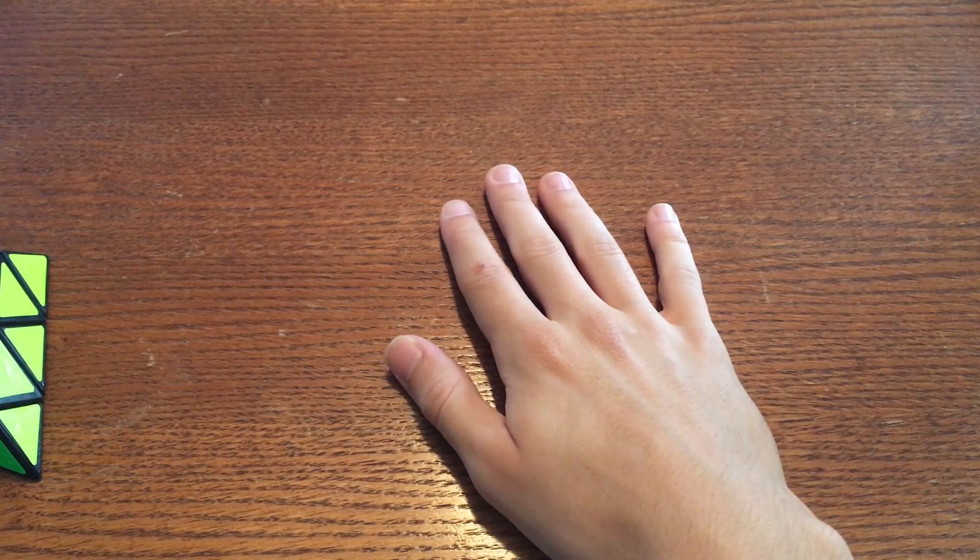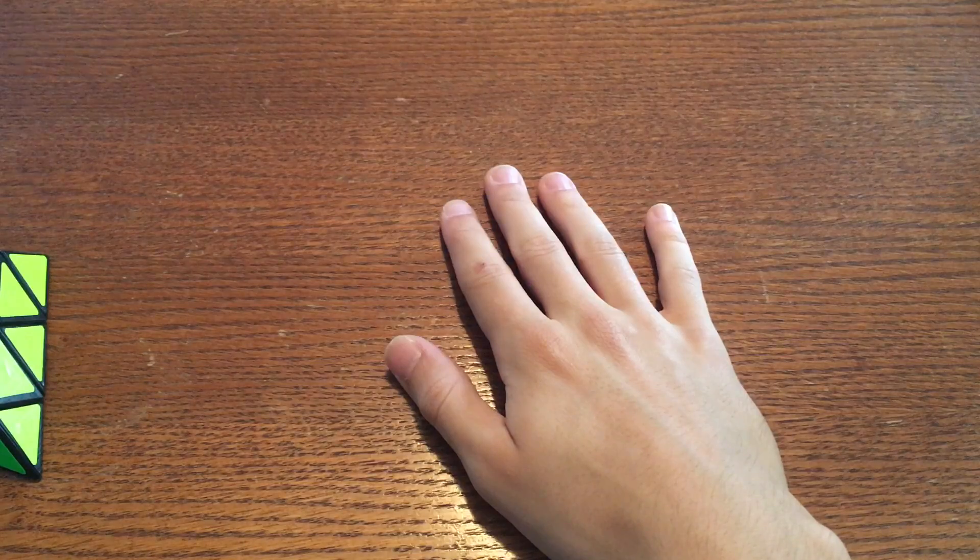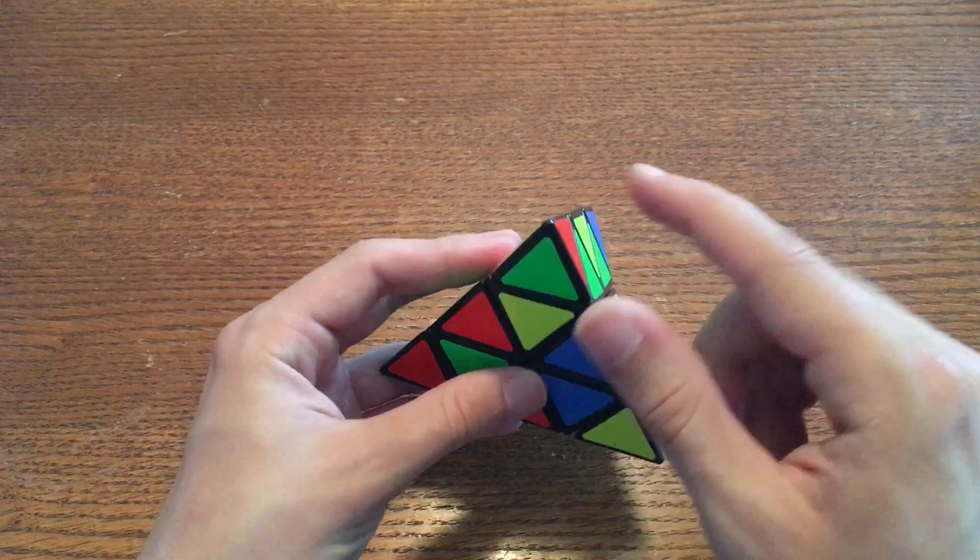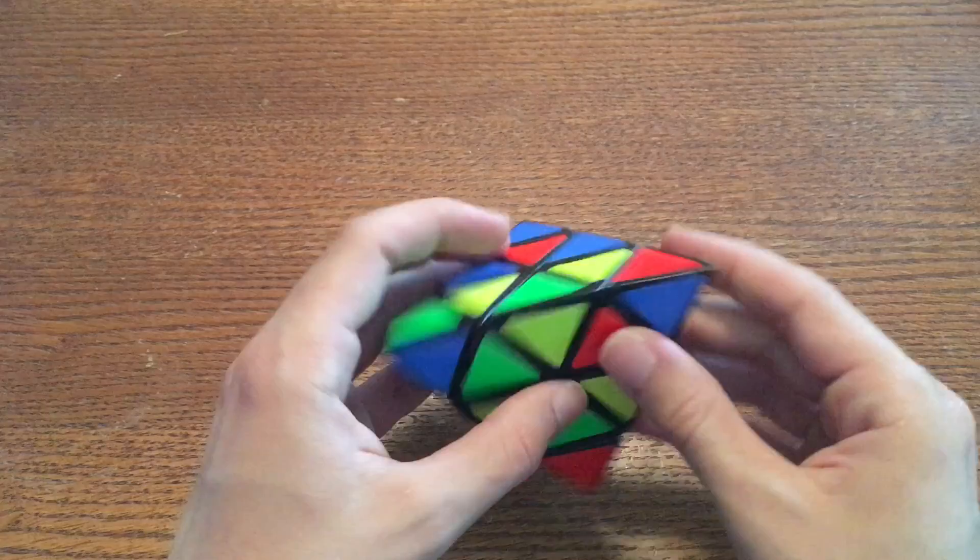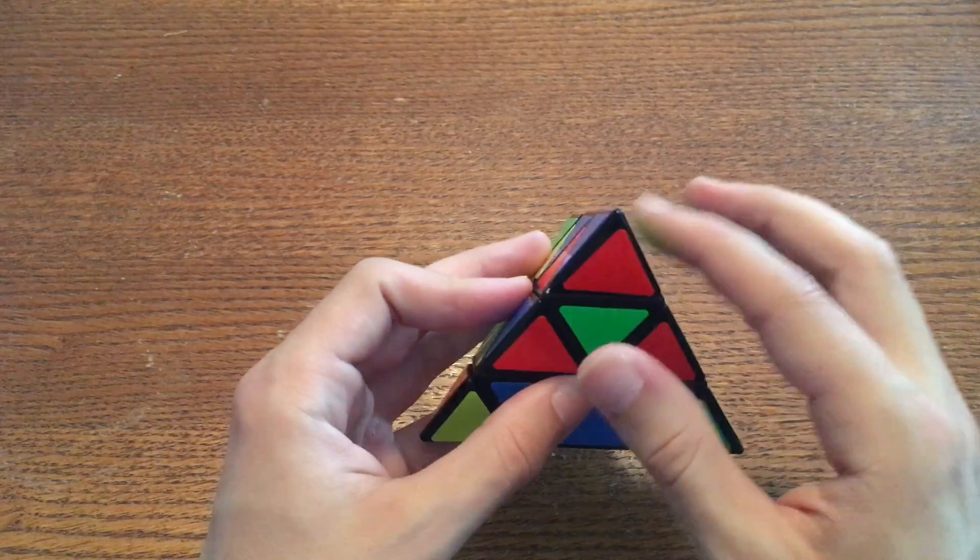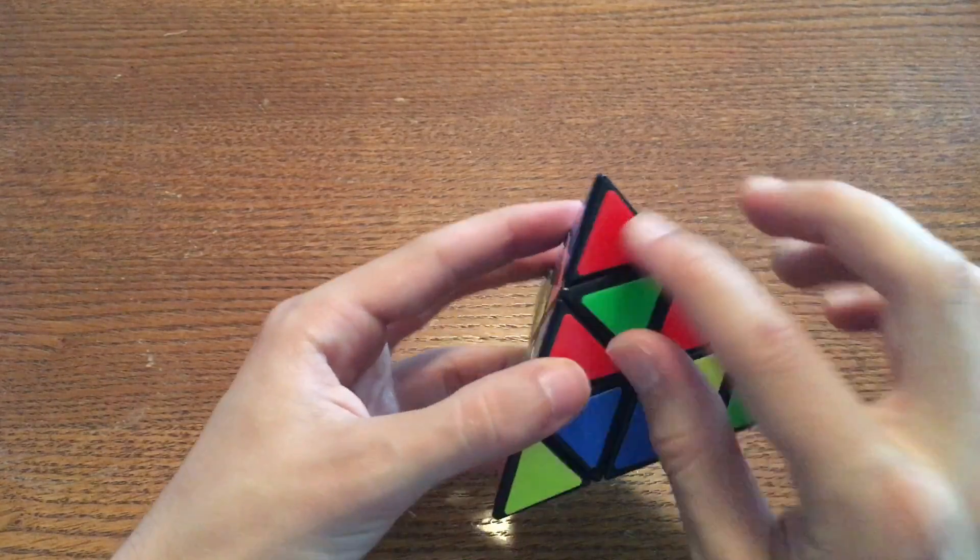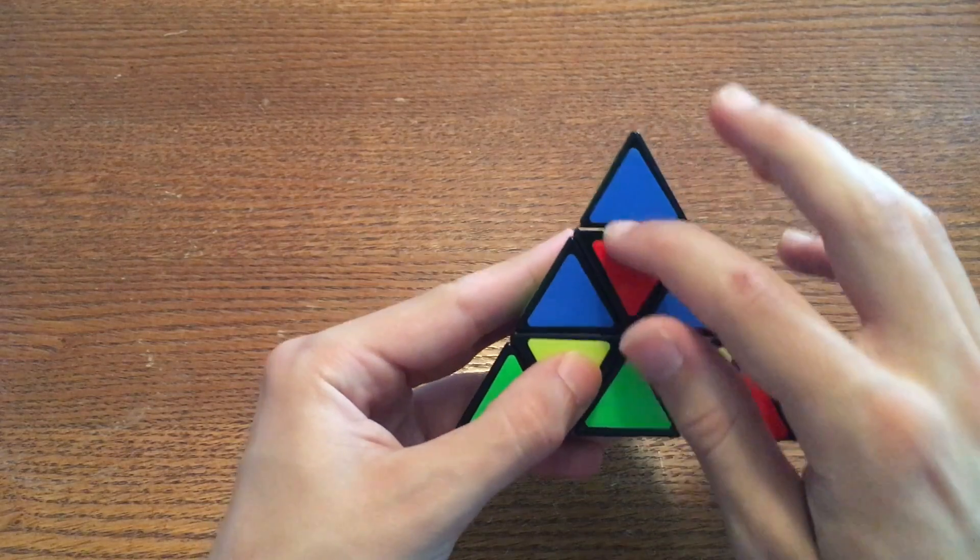If you need help read the description before commenting. Start by twisting each of these corners so that they are solved. A corner is solved when each of its three colors matches up directly with the centerpiece below it.